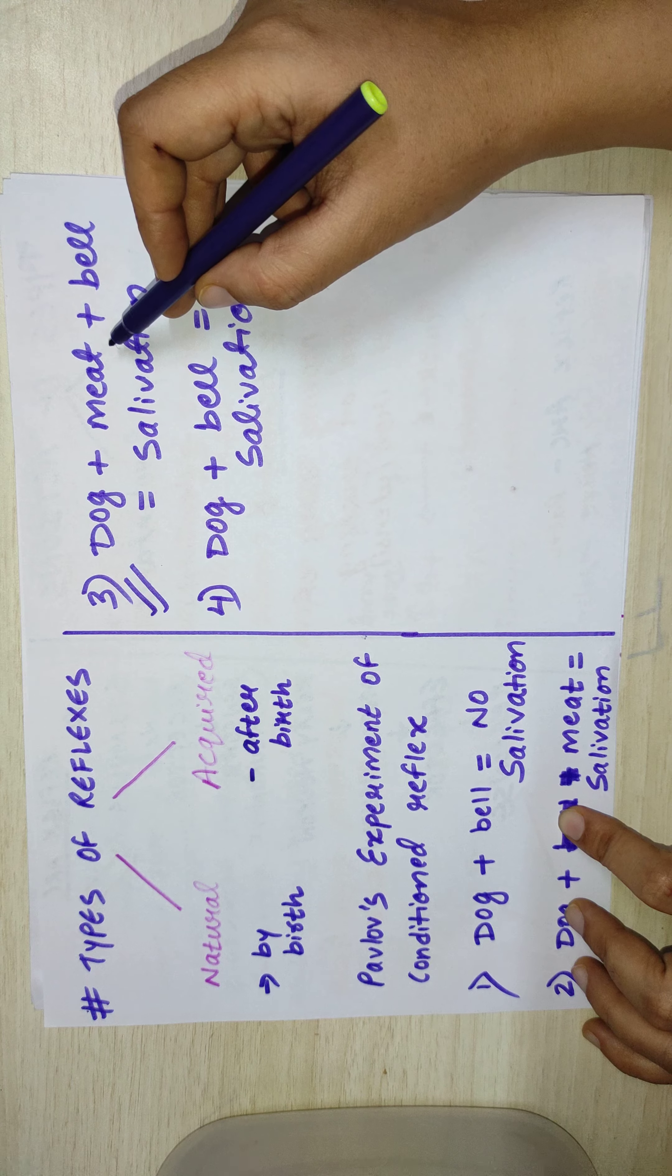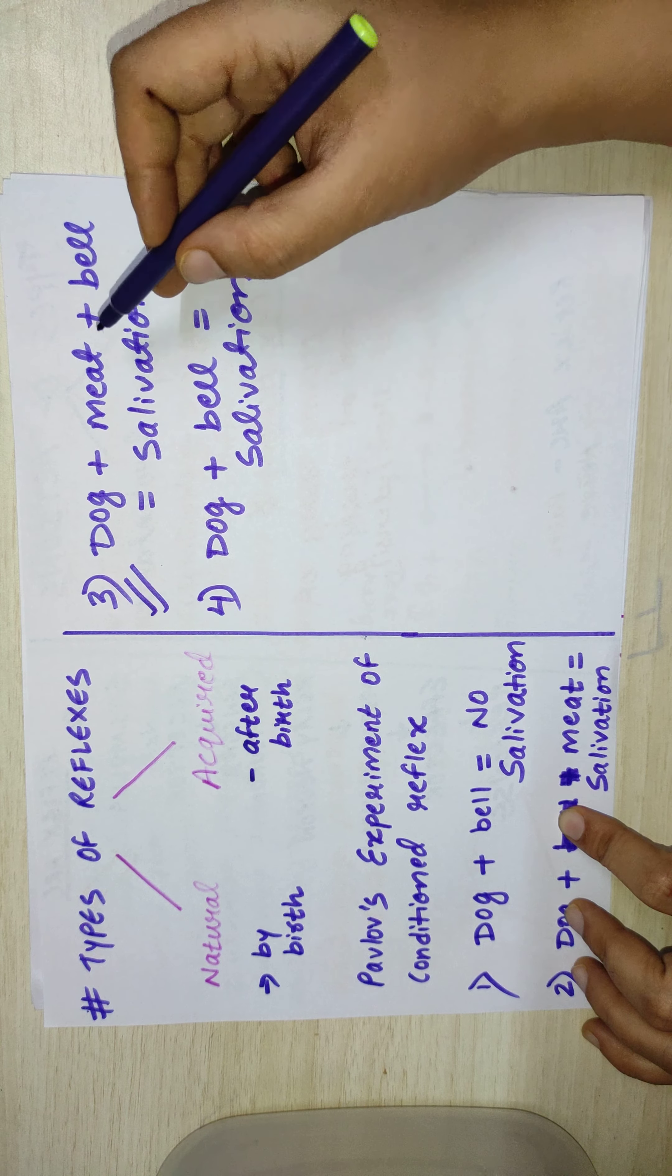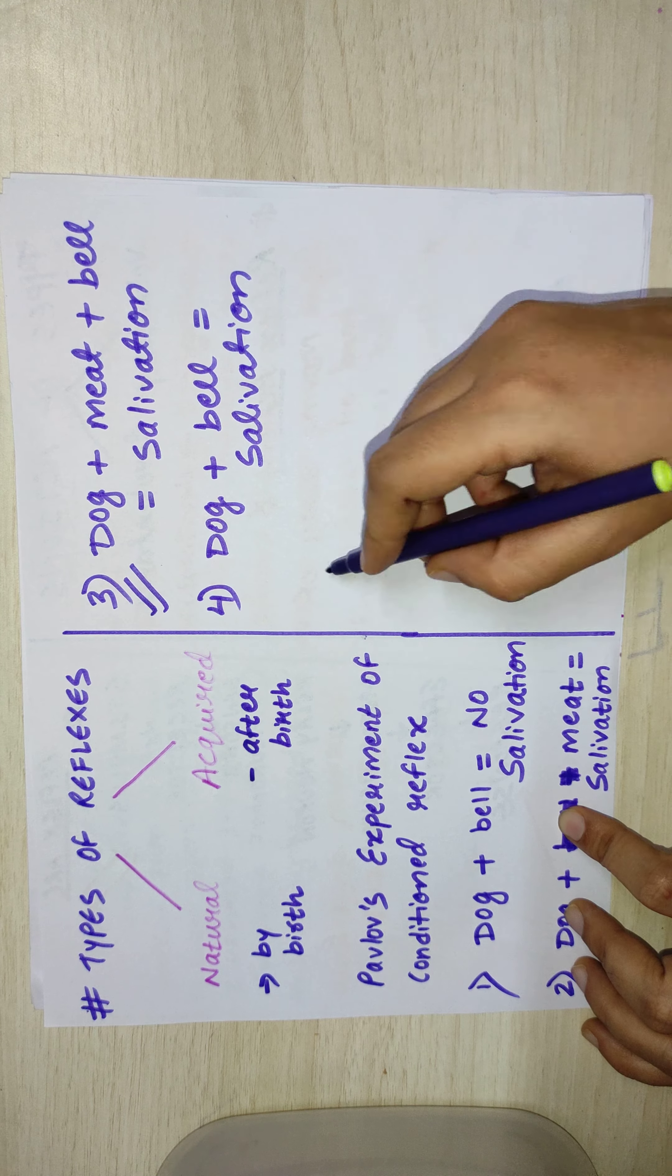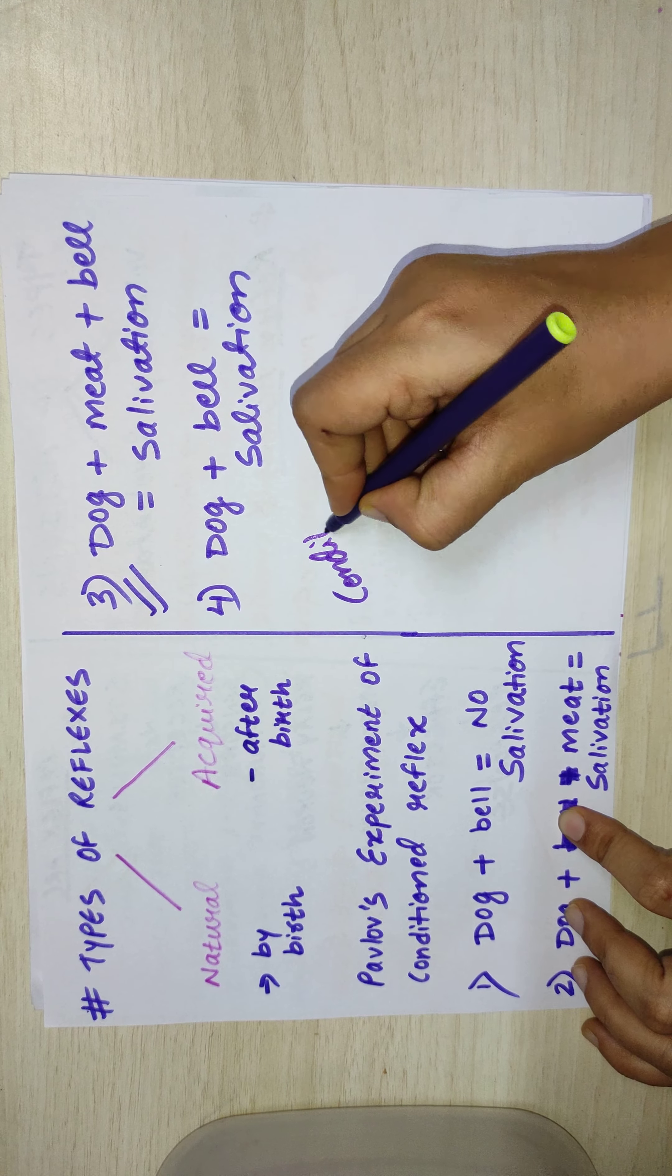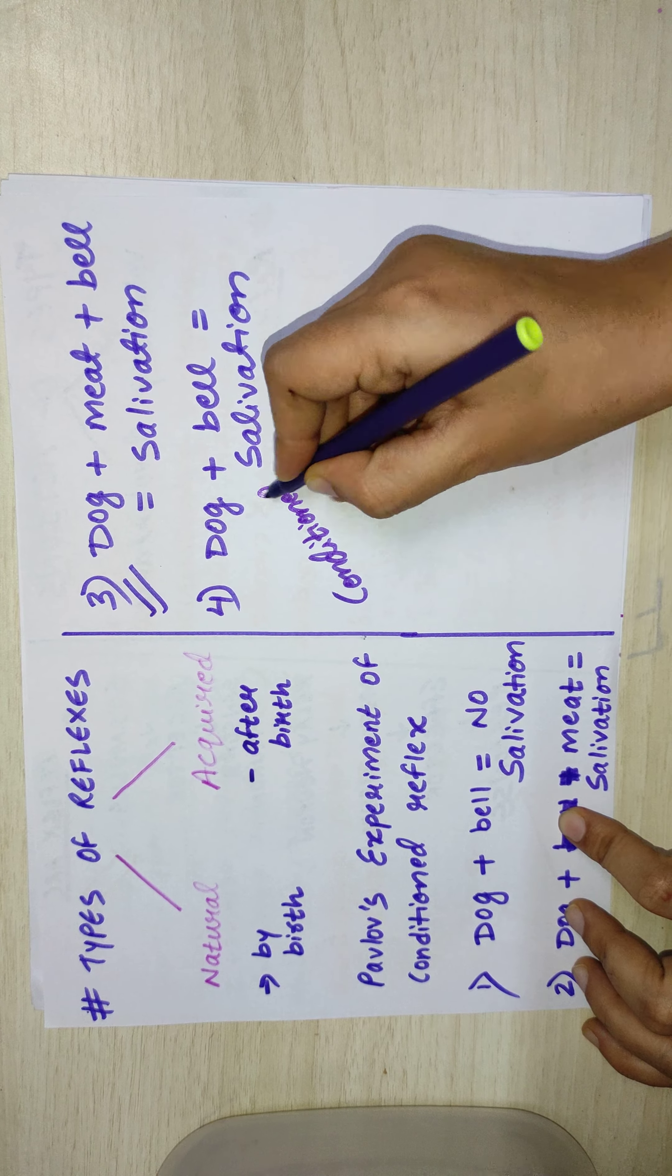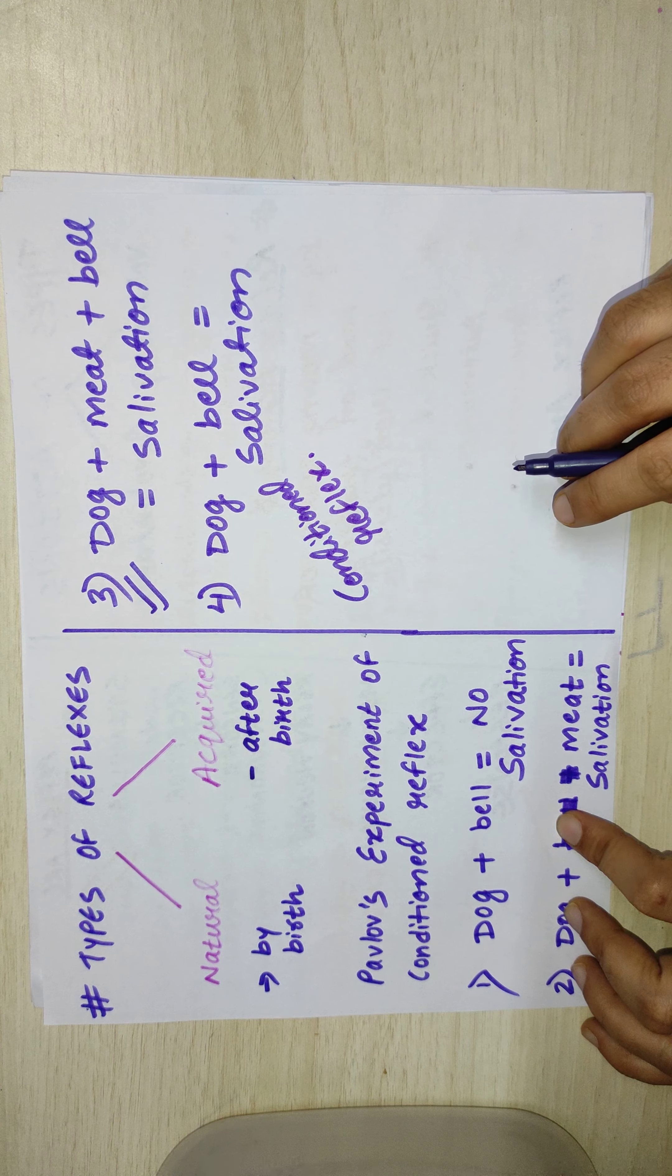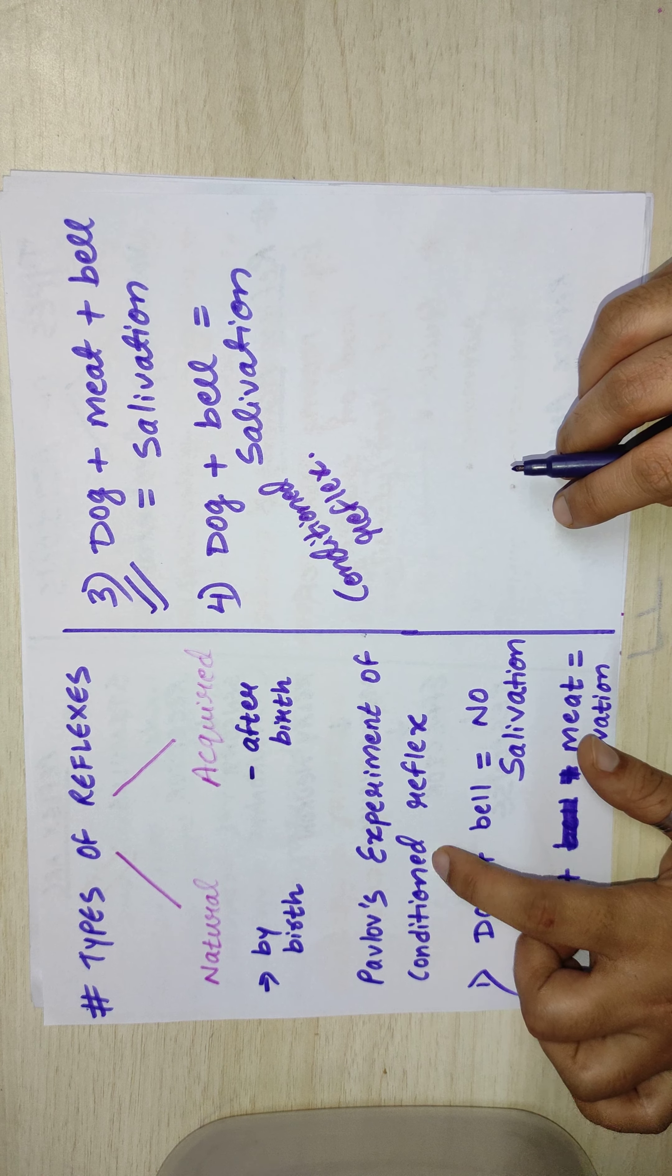There will be some meat near him, he'll get some meat. So that process or that reflex has been generated through conditioning, through learning. So that reflex is now known as conditioned reflex. Clear with it? This Pavlov's experiment you must go through it.